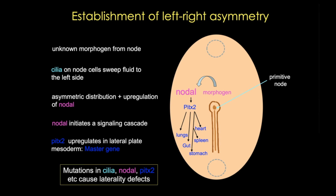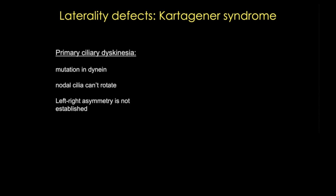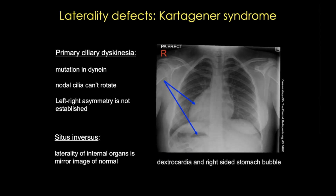An example is Kartagener syndrome, one of the primary ciliary dyskinesias. In this syndrome, a mutation in the motor protein dynein located on primary cilia means the nodal cilia cannot rotate and are unable to sweep and cause left-sided flow. Left-right asymmetry is not established, resulting in situs inversus, where major visceral organs are reversed or mirrored from their normal positions. A chest X-ray of a 17-year-old girl with Kartagener syndrome shows the heart on the right side — dextrocardia — and a stomach bubble also on the right.